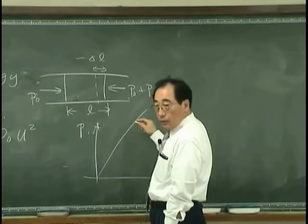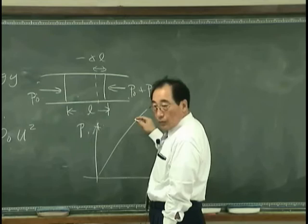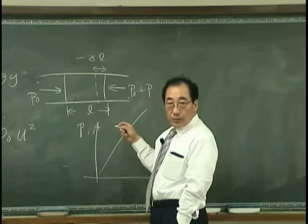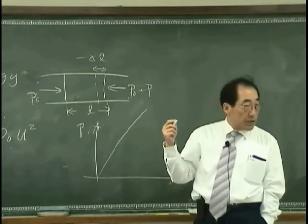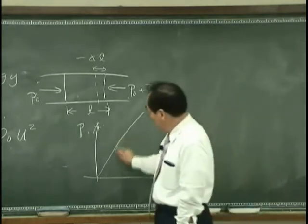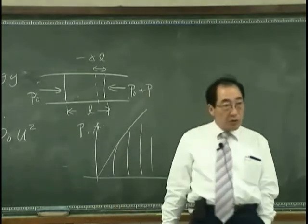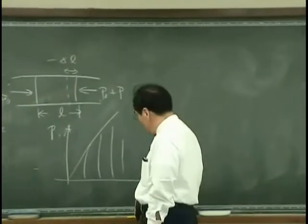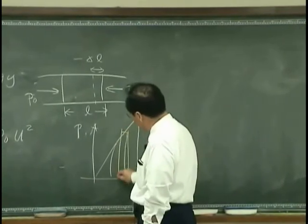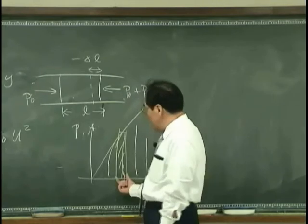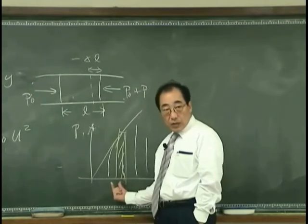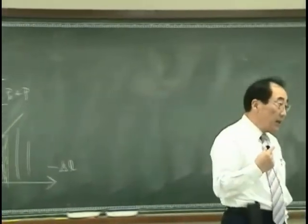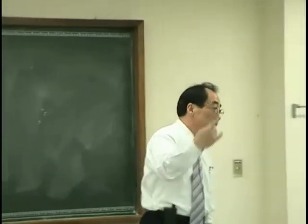So the work done, work done due to this excess pressure will induce the increase of potential energy has to be the area under this curve. Because if you look at some small element over here, then this is the amount of elongation you have. And this is the pressure you applied. That is work done. So accumulated work done